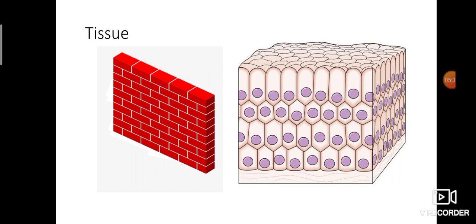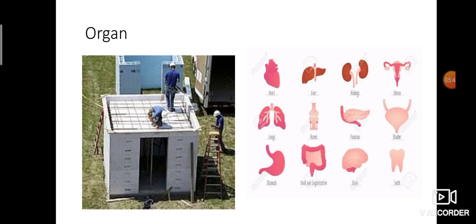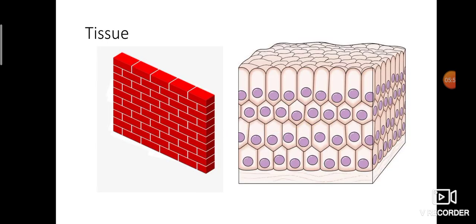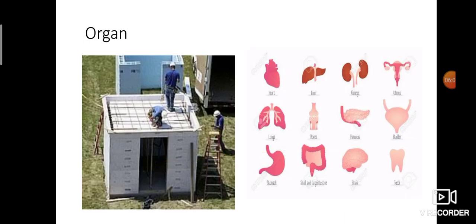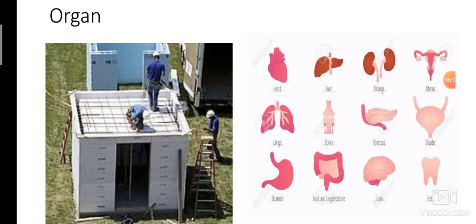So what do we mean by tissue? A group of cells forms a tissue. The next term is organ. The walls are ready; now we make a room. Like that, many layers of tissues joined together form an organ. Different types of organs are given here: heart, liver, kidneys, uterus, lungs, bones, pancreas, bladder, stomach, small and large intestine, brain, and teeth. A group of tissues joined together is called an organ.